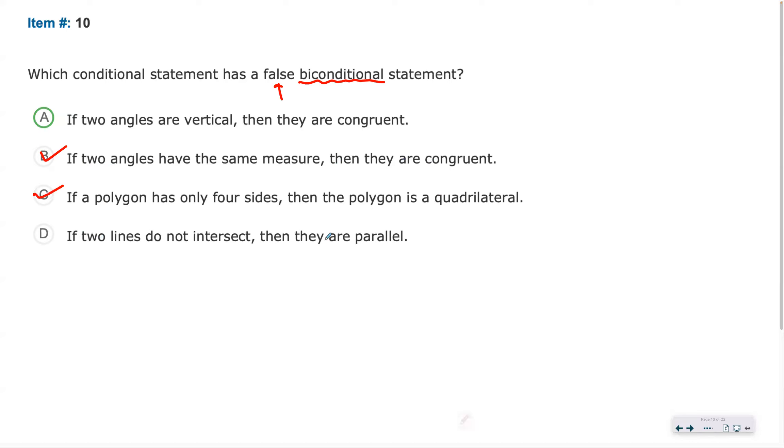If two lines are parallel, they do not intersect. That's true. Now if two lines do not intersect, they could also be skew though. That's what's a little tricky here. They could also be skewed, but they do not intersect.